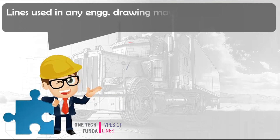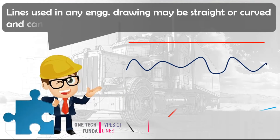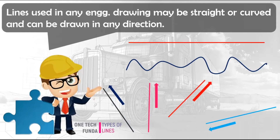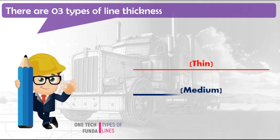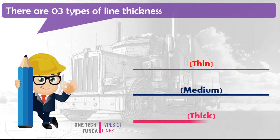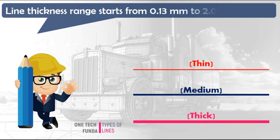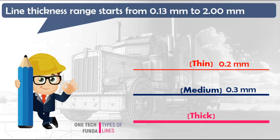Lines used in any engineering drawing may be straight or curved and can be drawn in any direction. There are three types of lines: thin line, medium line, and thick line. Line thickness range starts from 0.13mm to 2.00mm. Generally, 0.2mm line thickness is used as thin line, 0.3mm as medium line, and 0.5mm as thick line.